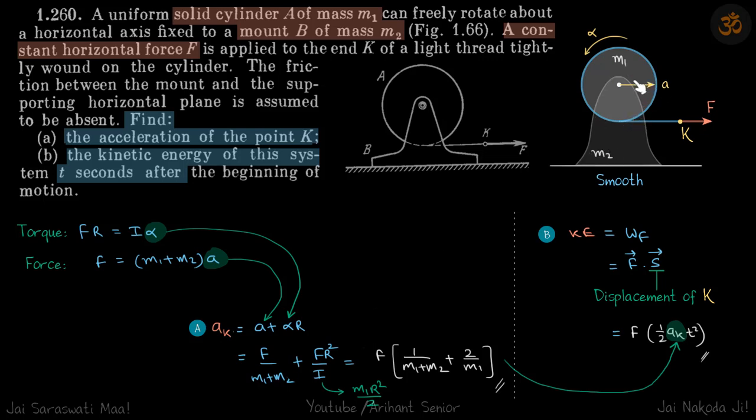We have this assembly where this cylinder is mounted on this stand and the surface is smooth. The bottom of this cylinder is being pulled with a force F. We need to find acceleration of point K.